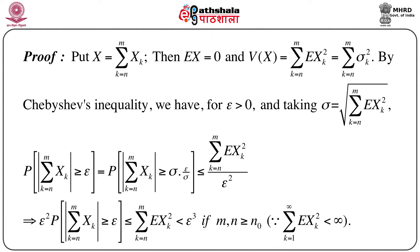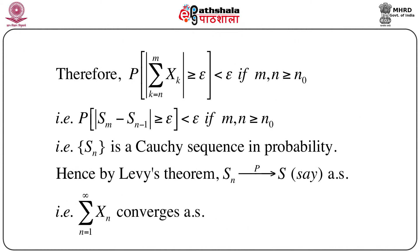A little simplification gives us: epsilon squared times the probability that the modulus of the summation of x_k is greater than or equal to epsilon is less than or equal to the summation of the expectation of x_k squared — call this less than epsilon cubed — whenever m and n are both greater than n_0. Since the condition says summation of expectation of x_k squared is less than infinity, for every epsilon we can always find an n_0 such that whenever m and n are both greater than n_0 this condition holds. Therefore, the probability that the modulus of the summation of x_k is greater than or equal to epsilon is less than epsilon, provided m and n are both greater than n_0.